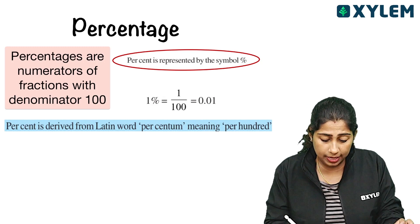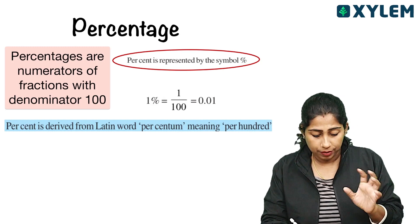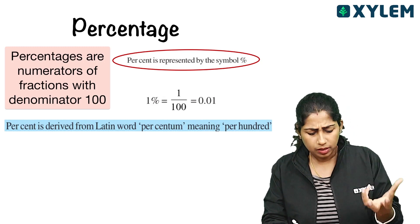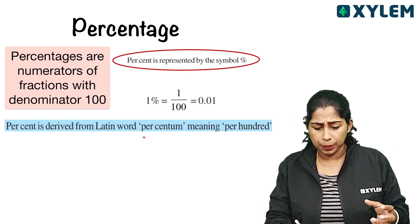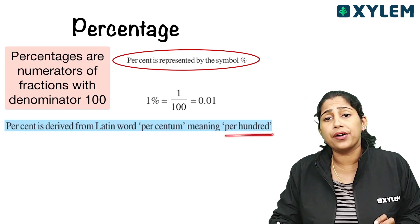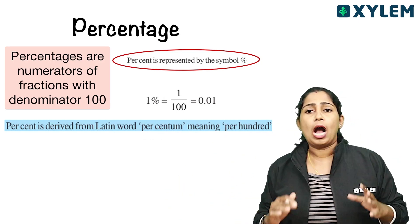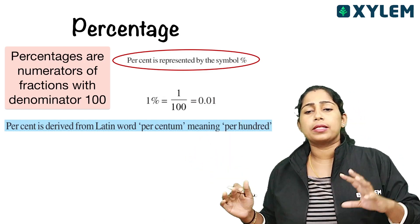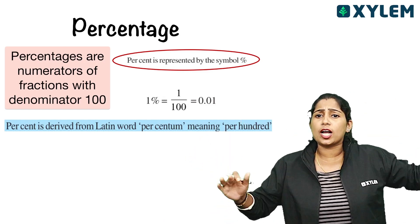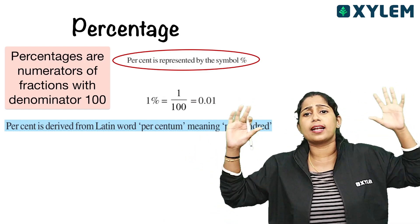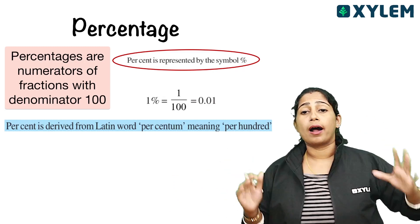The word percentage is derived from a Latin word. Percent is derived from the Latin word meaning per hundred — out of hundred. You can say that percentage means out of hundred.